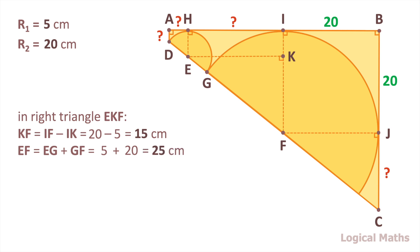Since we know two sides of the right triangle, we can figure out the length of the third side using Pythagorean theorem. EK squared equals to EF squared minus KF squared equals to 25 squared minus 15 squared and it equals to 20 squared. So EK equals to HI and equals to 20 cm.